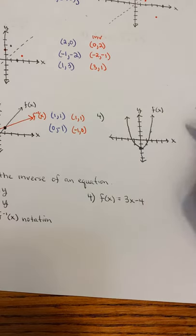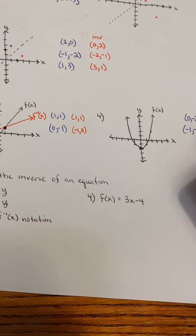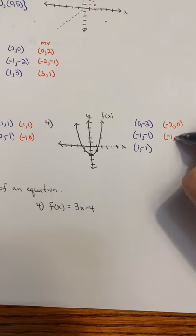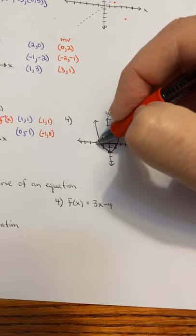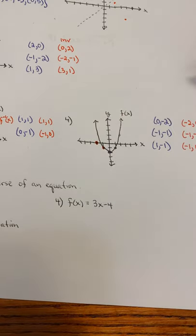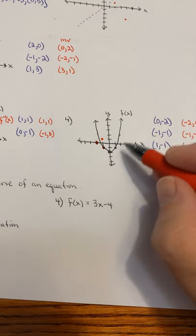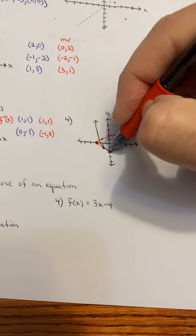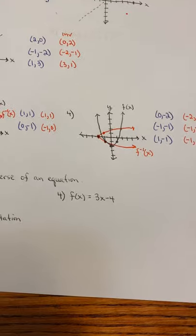This is not a line, so I'm going to need more than two points. Here's a point (0, -2), here's a point (-1, -1), and here's a point (1, -1). The inverse: (-2, 0) is the inverse of (0, -2). (-1, -1) is the same point. And (-1, 1) goes up there. The original is a parabola. This F of x is a parabola, and its inverse is a sideways parabola. It's not a function, but we'll get into that in another lesson.